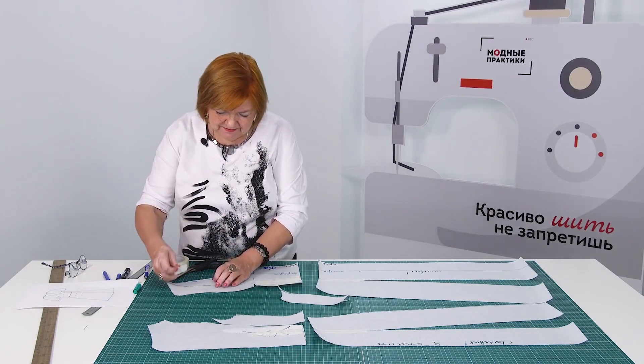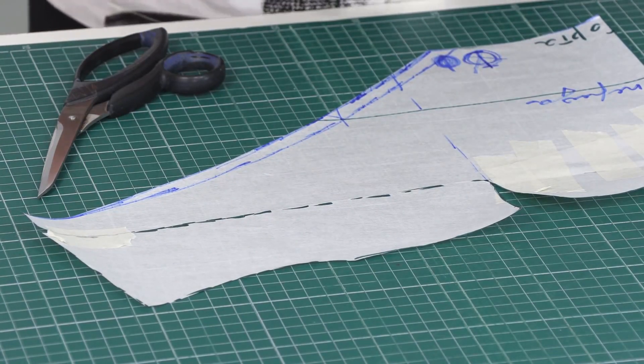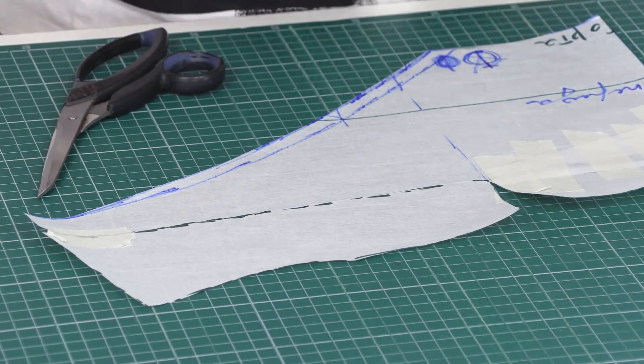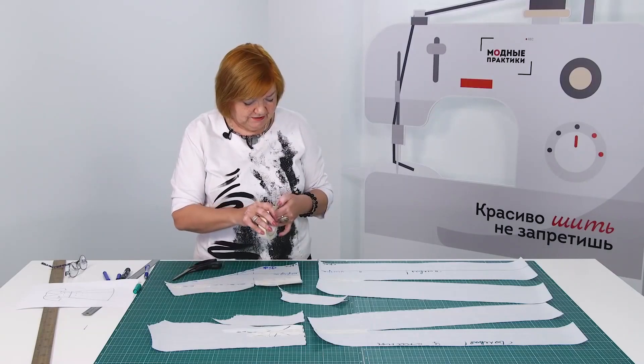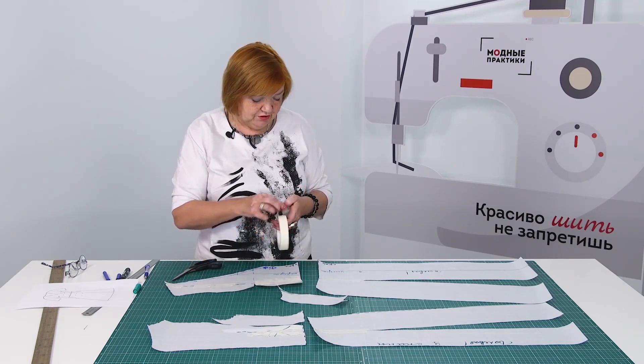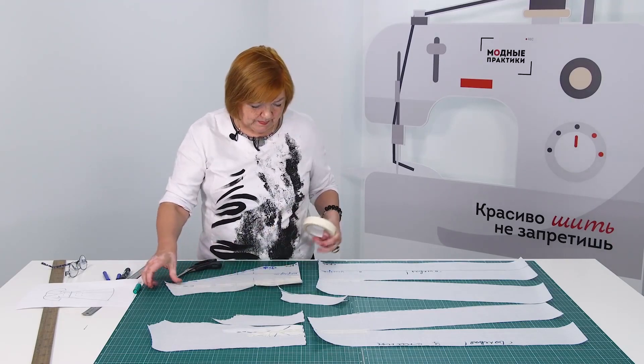The pattern for a wrap dress is ready. There will be a waist seam, the skirt will be flared, and there will be princess seams both on the front and the back. I hope that now it's clear for you how to make the flare. You can flare the skirts and dresses as much as you want. In this case, the dress will be slightly flared.